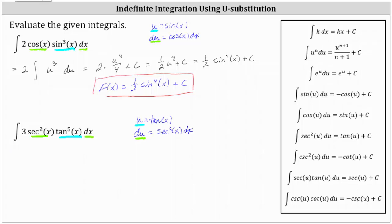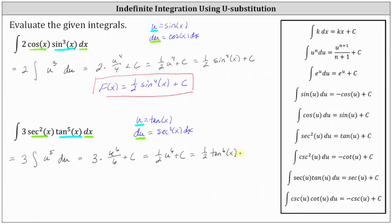Writing the integral in terms of u, we factor out the three. We have three times the integral of secant squared x dx equal to du, and tangent to the fifth x is equal to u to the fifth, since u is equal to tangent x. Integrating with respect to u, we have three times u to the power of five plus one, which is six, divided by six plus c. Three-sixths is one-half, giving us one-half times u to the sixth plus c, which in terms of x is one-half times tangent to the sixth x plus c.